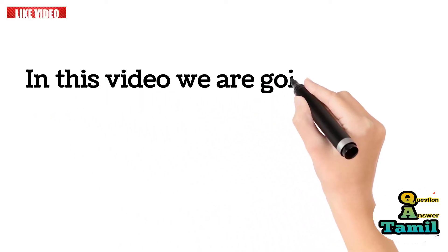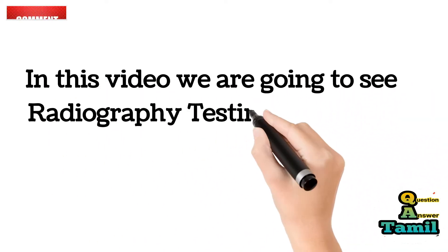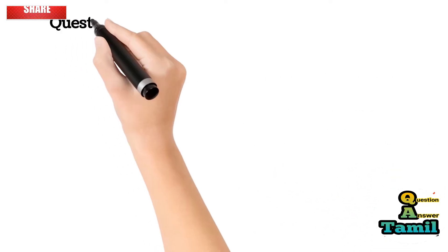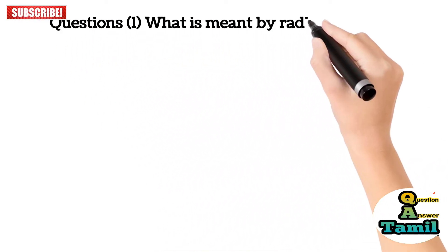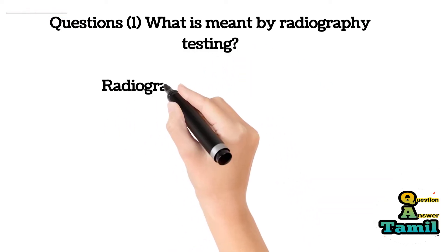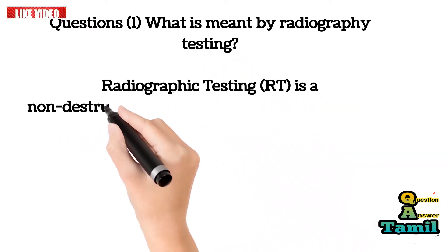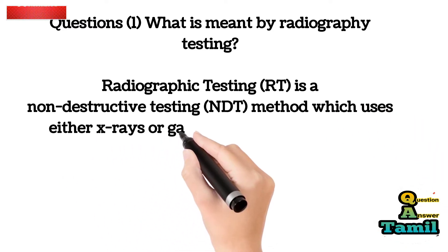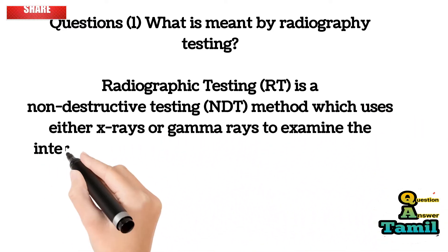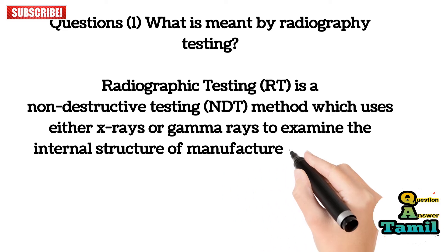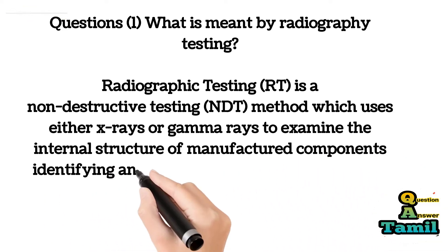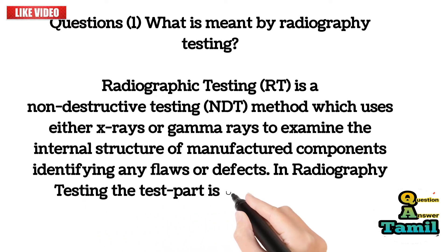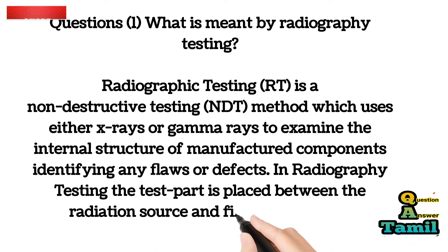In this video we are going to see radiography testing interview questions and answers. Question 1: What is meant by radiography testing? Radiographic testing (RT) is a non-destructive testing (NDT) method which uses either X-rays or gamma rays to examine the internal structure of manufactured components, identifying any flaws or defects. In radiography testing, the test part is placed between the radiation source and film or detector.